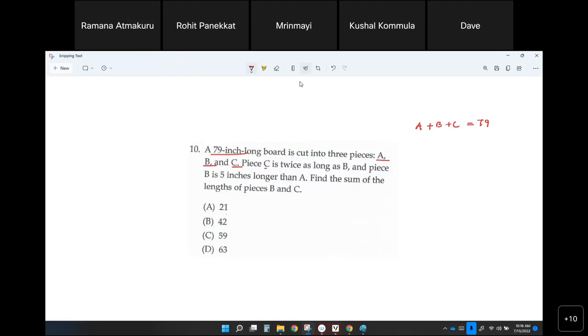And then what else is he saying? Piece C is twice as long as B. So C is twice as long as B. Piece B is five inches longer than A. Everybody got that? Yes. Okay.